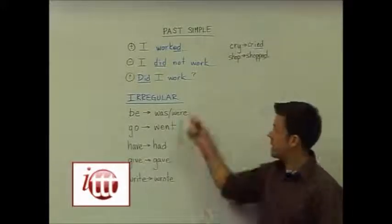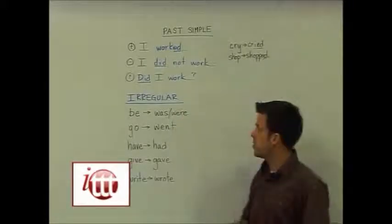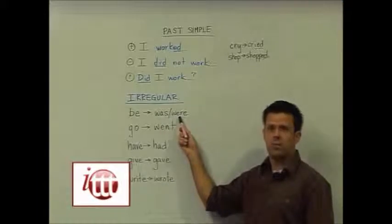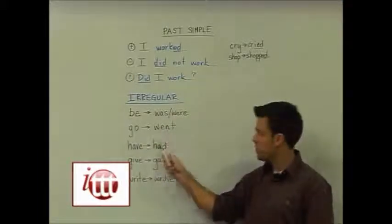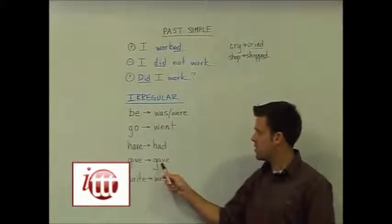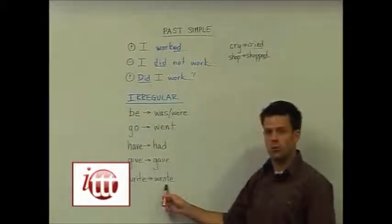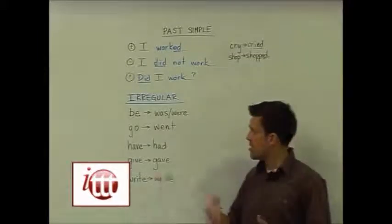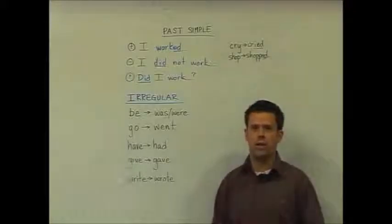Our irregular verbs change their form altogether. A few examples: 'be' goes to 'was' or 'were' depending on the subject; 'go' to 'went'; 'have' to 'had'; 'give' to 'gave'; 'write' to 'wrote'. Of course, there are further irregular verbs which I encourage you to look up in your materials or online.